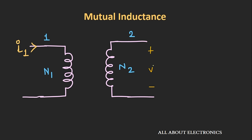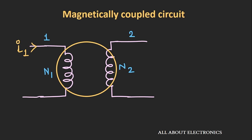Earlier we had seen the self-inductance and the mutual inductance in the electrical circuit. In mutual inductance, whenever the current I flows through one coil, it produces a voltage in the nearby coil — the flux of one coil gets coupled to another coil. These kinds of circuits are known as magnetically coupled circuits. The voltage induced in the nearby coil can be given as V = M·di1/dt, where M is the mutual inductance between the two coils.